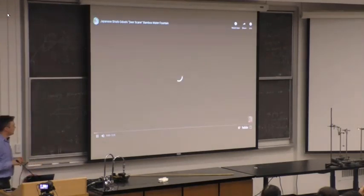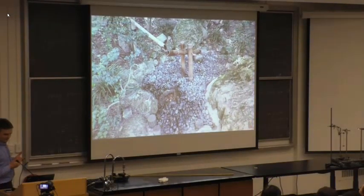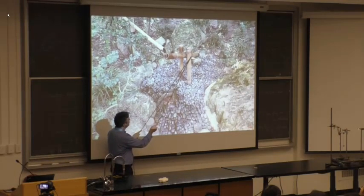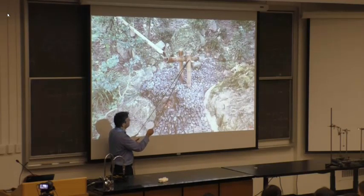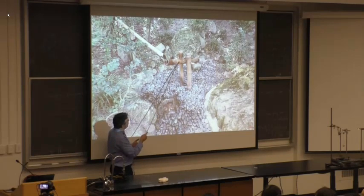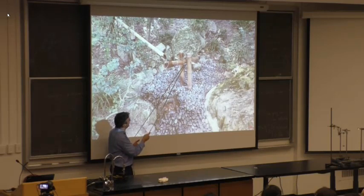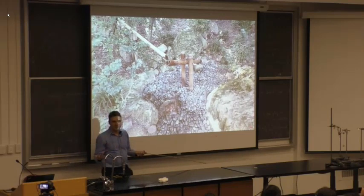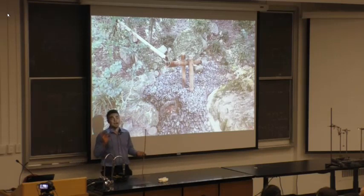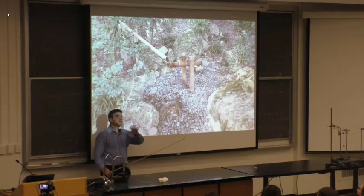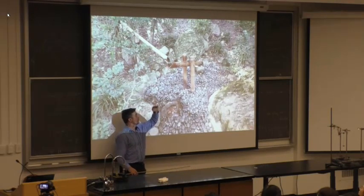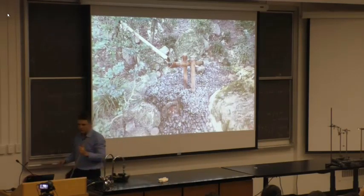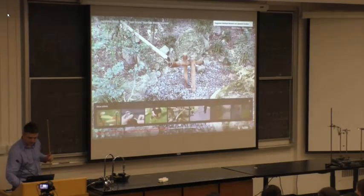Here's a YouTube video of a Japanese fountain. Water fills the tube, the center of mass shifts past the pivot, it dumps out, and the process repeats. This is an oscillating motion with a period, but it is not simple harmonic motion — you can't describe it with a sine wave. It's more of a sawtooth or square wave: stays constant for a long time, decreases quickly, then goes back up.